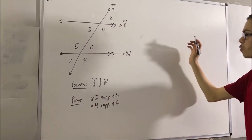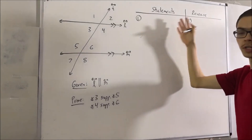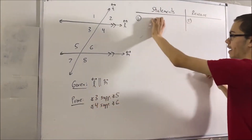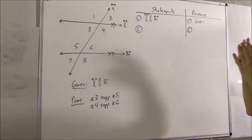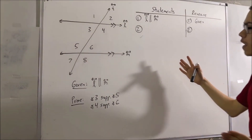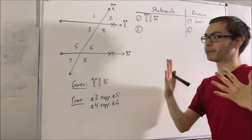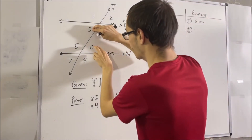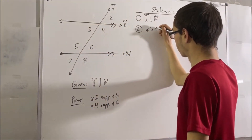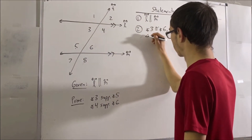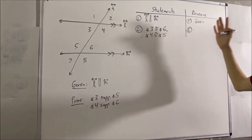We're going to start this proof by constructing our statements-and-reasons table. For our first step, we're going to write what we're given, which is that line L is parallel to line M. For our second step, we're going to apply the alternate interior angles theorem. If these two lines are parallel, then the pairs of alternate interior angles must be congruent. So angle 3 is congruent to angle 6, and angle 4 is congruent to angle 5 — by the alternate interior angles theorem.